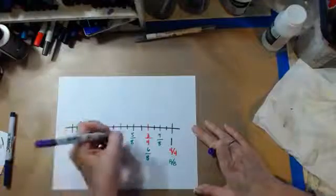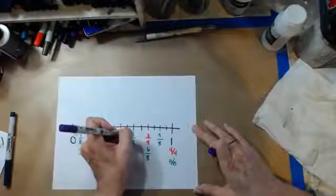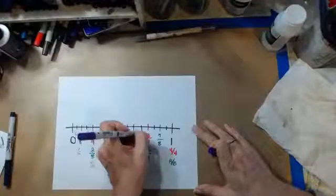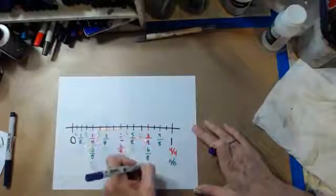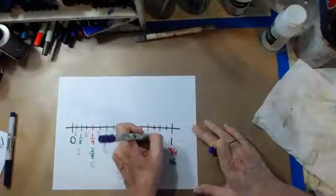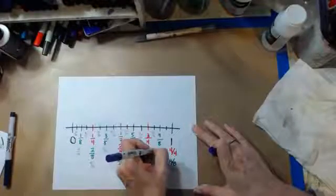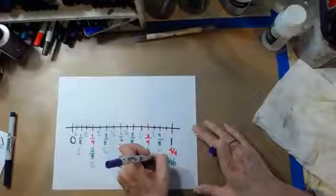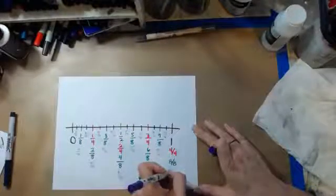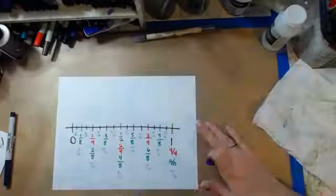You've got one. And these are all equivalent fractions. Nine sixteenths, ten sixteenths, eleven sixteenths, twelve sixteenths, thirteen sixteenths, fourteen sixteenths, fifteen sixteenths, and sixteen over sixteen.